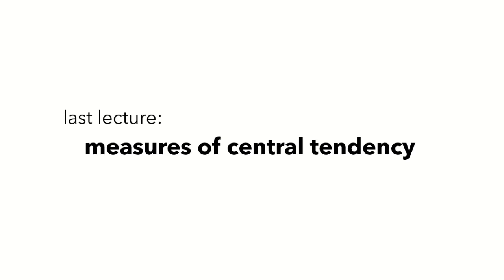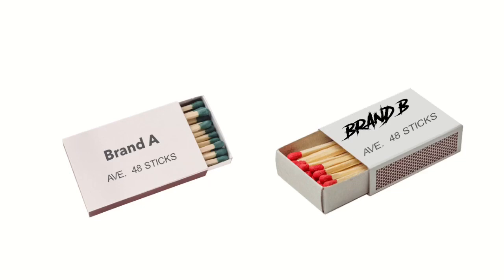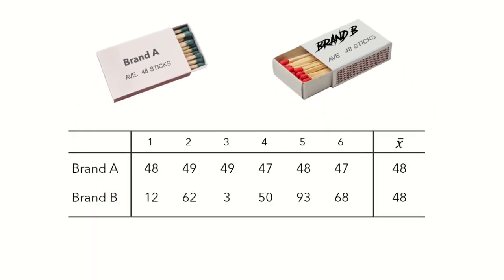Before we proceed with the actual lesson, let's first consider this scenario. Suppose we have two brands of matches — Brand A and Brand B. Our trusted Brand A claims that on average each box contains 48 matchsticks. Brand B also claims their boxes contain 48 matchsticks on average. You tested both claims and for Brand A you got 48, 49, 49, 47, 48, and 49 sticks per box. You calculated the mean and just as written on the box, they contain 48 matchsticks on average.